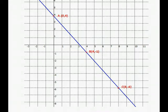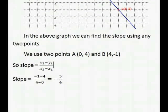Let's see an example where we have given a graph of a line. Here I have marked three points on the graph: A, B, and C. We can take any two points to find the slope of the line. Now I am taking two points A and B. Substitute the values of point A and B in the formula. So slope of the line is minus 5 by 4.